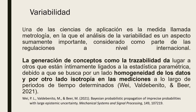El proceso de obtención de la incertidumbre contempla la variabilidad de las mediciones. Como parte de la ciencia de la metrología, es importante considerar que existen regulaciones a nivel internacional cuyo fundamento parte en dos sentidos: primero, el concepto de trazabilidad, que da lugar a la homogeneidad de los datos y la estabilidad de las mediciones de manera espacial; y por otro lado, la isotropía, cuya característica nos permite que a lo largo del tiempo no se consideren variaciones sustanciosas que puedan modificar un resultado.